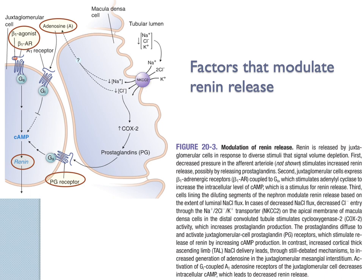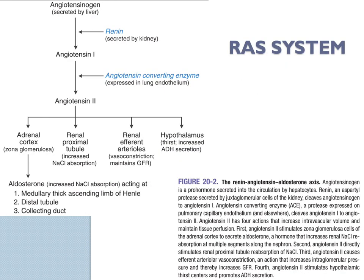Looking at the RAS flow chart — angiotensin 2 has multiple effects: on the adrenal cortex, renal proximal tubule to increase sodium reabsorption, which increases water reabsorption since water follows sodium ions. Angiotensin 2 also has direct effects on renal arterioles for vasoconstriction, on the thirst system, and is downstream for aldosterone production. Know the effects of angiotensin 2 because if you inhibit the ACE enzyme or receptor, you reduce all these effects.